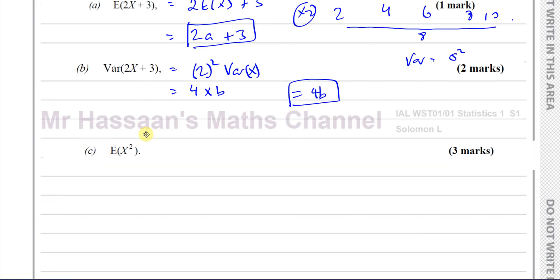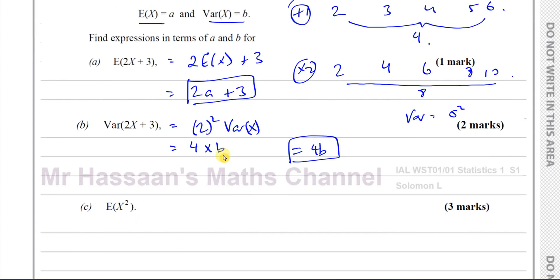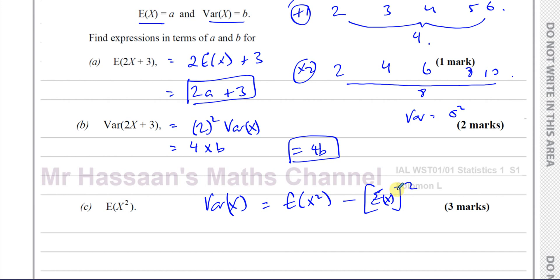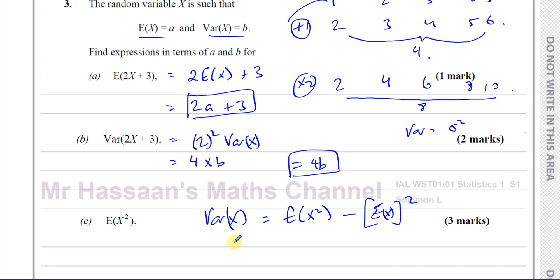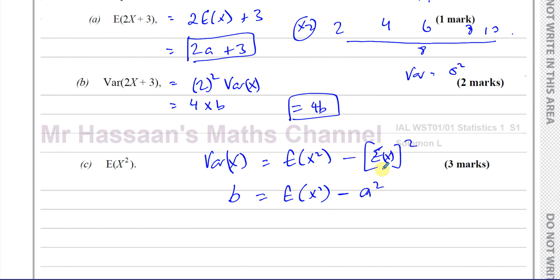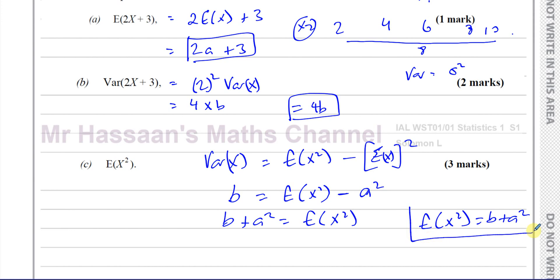Part c is asking for the mean of the squares, E(x²). We know that the variance of x equals the mean of the squares minus the square of the mean: Var(x) = E(x²) − [E(x)]². We know the variance is b and E(x) is a, so b = E(x²) − a². Rearranging, E(x²) = a² + b. There's the answer to part c.